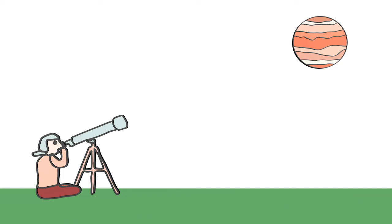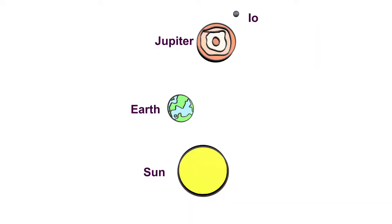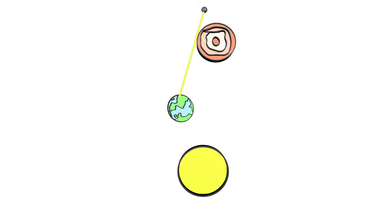Since Jupiter and Earth take different times to orbit the sun, the distance between Earth and Jupiter's moon Io varies. Römer waited for the day when Earth was very close to Jupiter and started timing when Io just emerged from Jupiter's shadow. He then waited until Io completely orbited Jupiter and stopped the time when it reappeared. It took 42.5 hours to orbit.